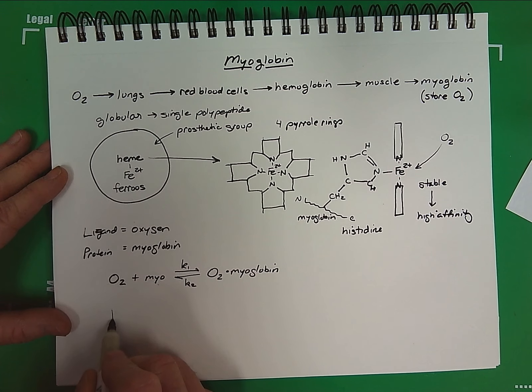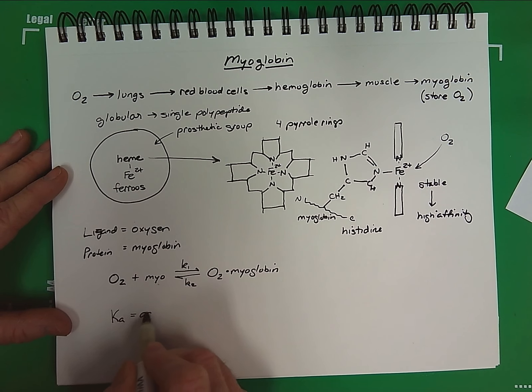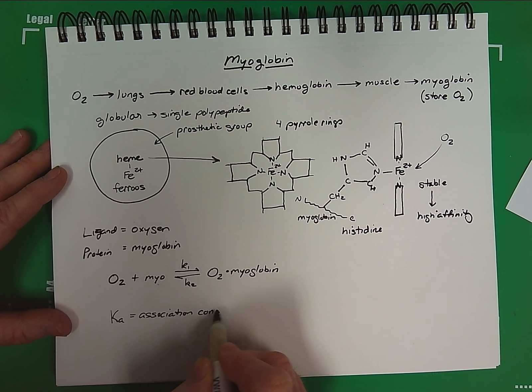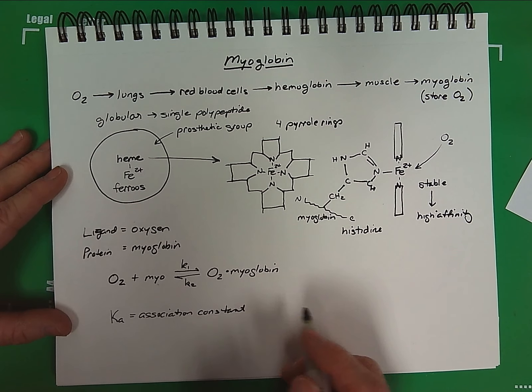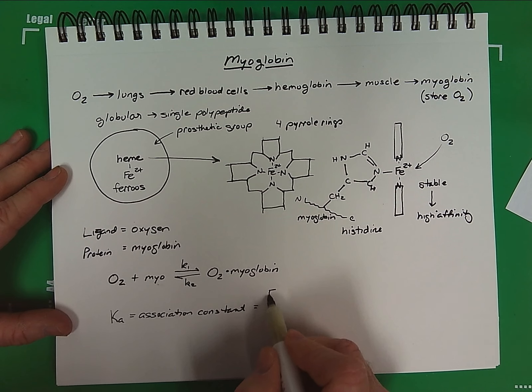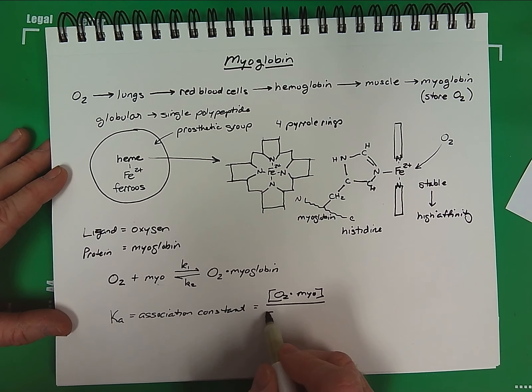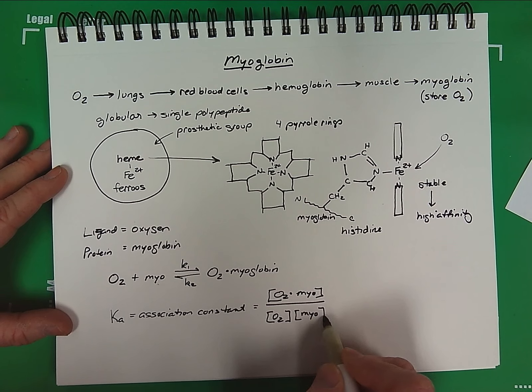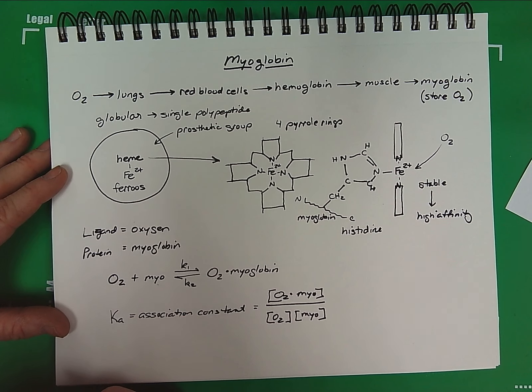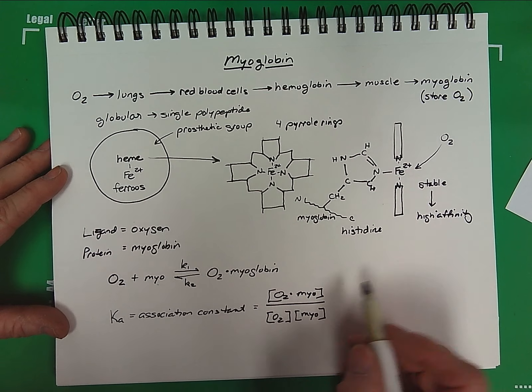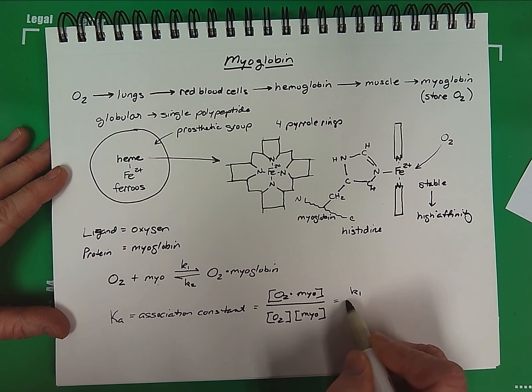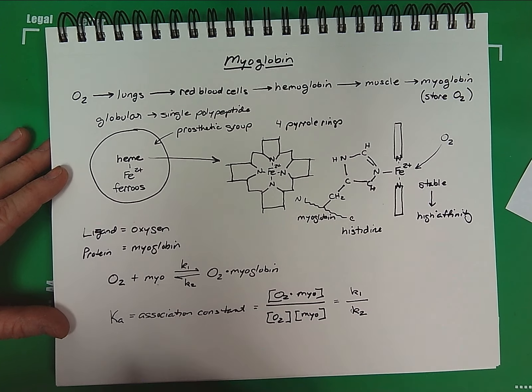Now recall that the Ka, which equals the association constant, is equal to the product of our complex formation of oxygen and myoglobin over our substrates, the concentration of oxygen times the concentration of myoglobin. This is our association kinetics. This, of course, equals the association rate over the dissociation rate.